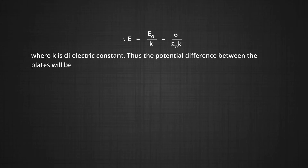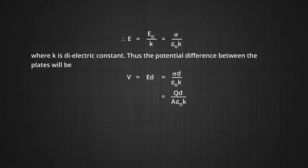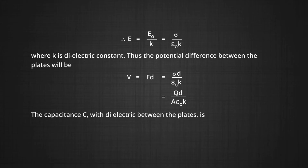Thus, the potential difference between the plates will be V equal to E times D, the distance between the plates, which is equal to sigma times D upon epsilon naught times K. As sigma is charge density equal to Q upon A, so the net formula becomes V equal to Q times D upon A epsilon naught times K. The capacitance C with dielectric between the plates is C equal to Q by V, which is equal to A epsilon naught times K by D. This is equation number 2.